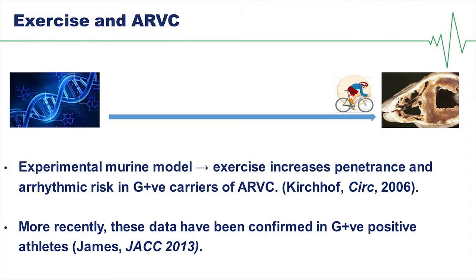The genotype-phenotype interaction is more complex in ARVC than in HCM. Exercise has been shown to play a fundamental role in unmasking the phenotype — animal models have demonstrated increased penetrance and arrhythmic risk in gene-positive subjects, and this has been translated clinically with gene-positive athletes unmasking the phenotype, highlighting an important link between exercise and outcomes in mutation-positive ARVC patients and family members.